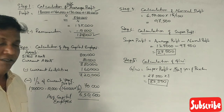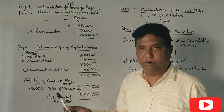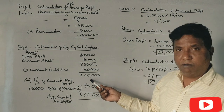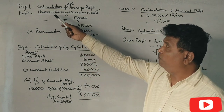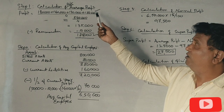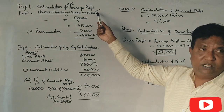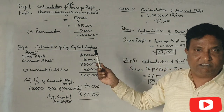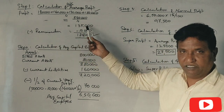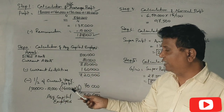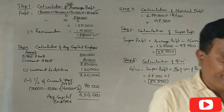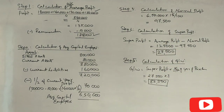So the goodwill is calculated as super profit multiplied by three years. To find the capital employed, we subtract liabilities from total assets. The adjustment in capital and the four years' profit figures were used to arrive at the final goodwill figure.